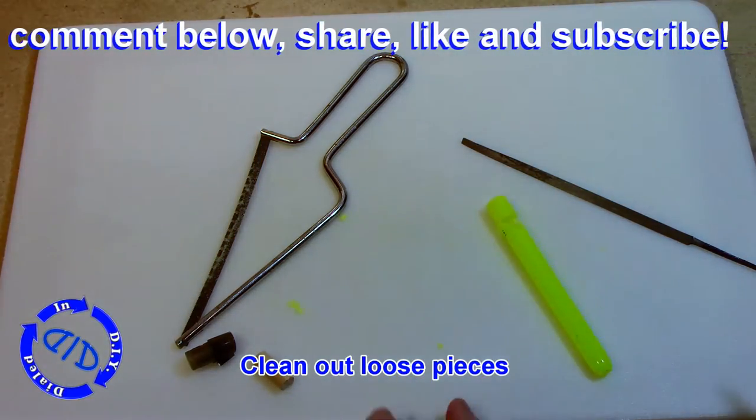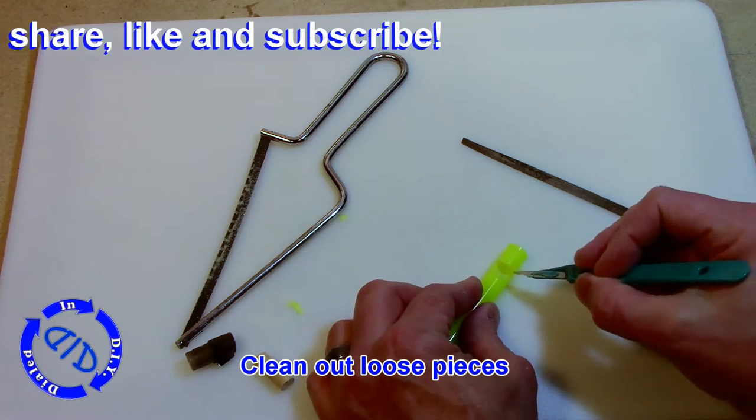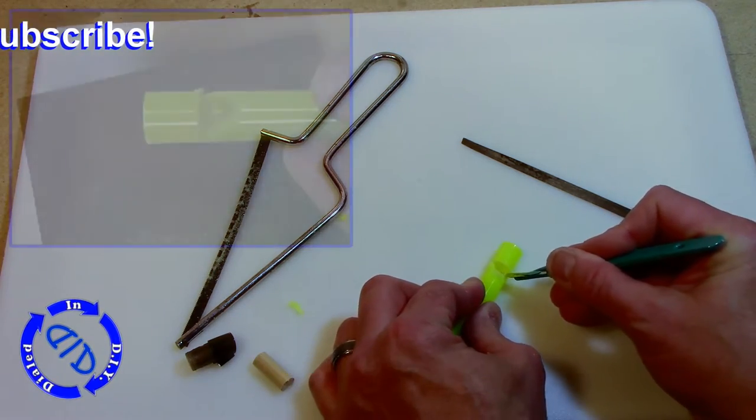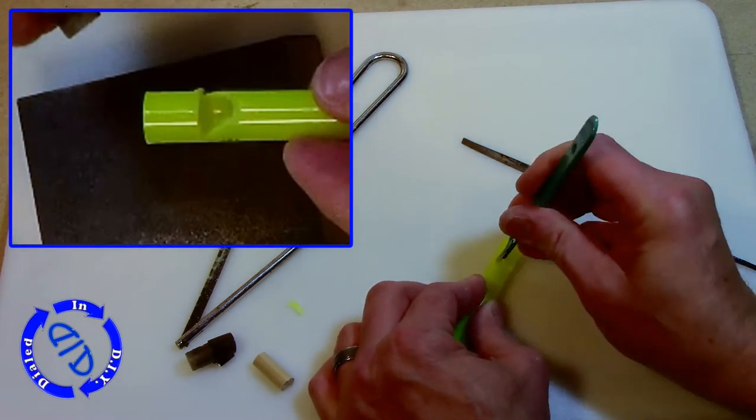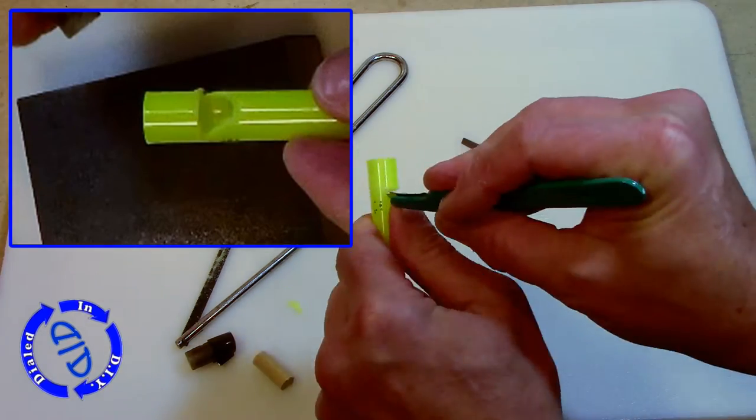To make sure we're getting the cleanest sound out of our whistle, we're gonna go back and remove any of the little loose pieces. I'm taking a little knife here just to cut away any extra free debris, and then I'm gonna file it down or sand it off just a little bit more to make it all smooth.